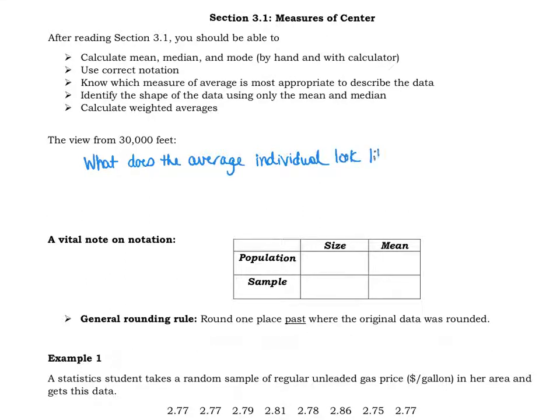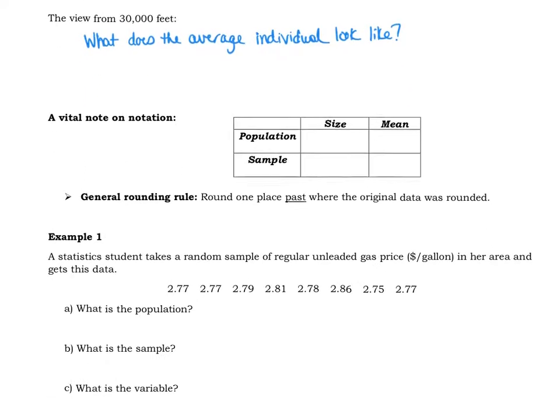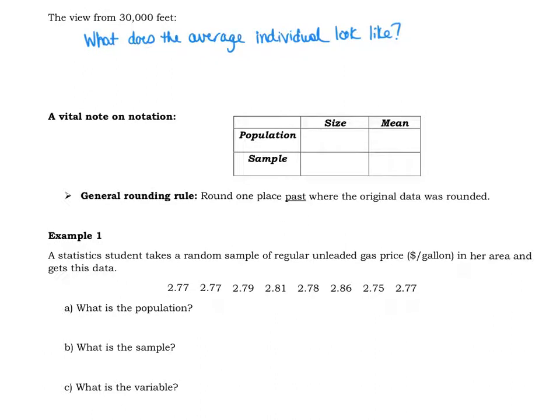Once we get all of this information, what does the typical individual within our sample happen to look like? Some things about notation, because these are the symbols you're going to be seeing and using. We've already talked about the symbol for sample size—sample size is a lowercase n. When we're talking about the population, we use a capital N to represent the size of the population.